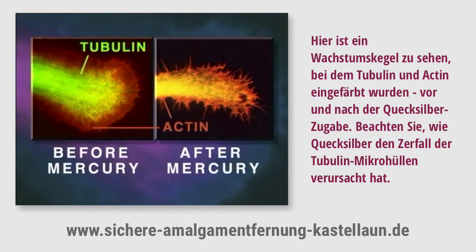Shown here is a neurite growth cone stained specifically for tubulin and actin, before and after mercury exposure. Note that the mercury has caused disintegration of tubulin microtubule structure.